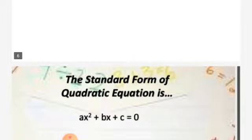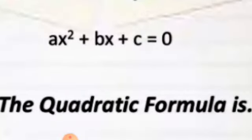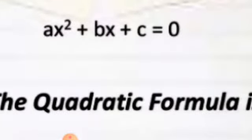In this exercise, the first thing is the standard form of a quadratic equation. The standard form of a quadratic equation is ax² plus bx plus c. Quadratic means having the highest power equal to 2, which is the degree of the equation equal to 2.